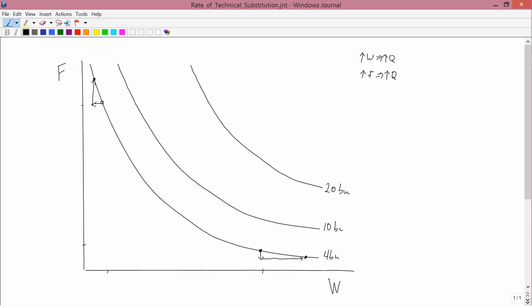We have a name for the slope, or actually a name for minus 1 times the slope. Minus 1 times the slope of an isoquant is called the rate of technical substitution of whatever is on the horizontal axis. I call it W. Here I put W on the horizontal axis. For whatever is on the vertical axis, and I put F on the vertical axis in this example.